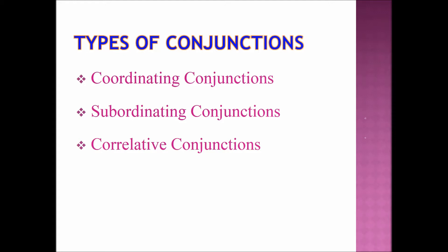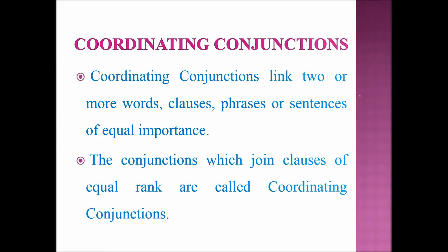Let's see them one by one in detail. First, we are going to learn about coordinating conjunctions. Coordinating conjunctions link two or more words, clauses, phrases, or sentences of equal importance. In other words, the conjunctions which join clauses of equal rank are called coordinating conjunctions.